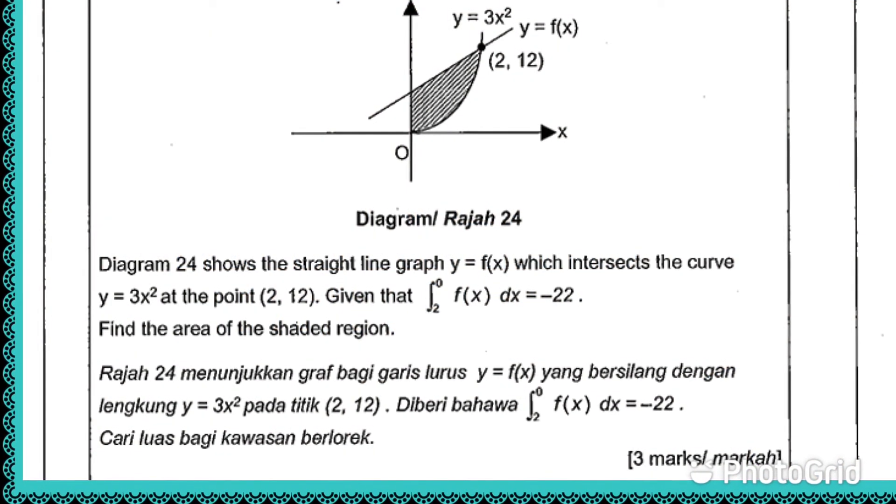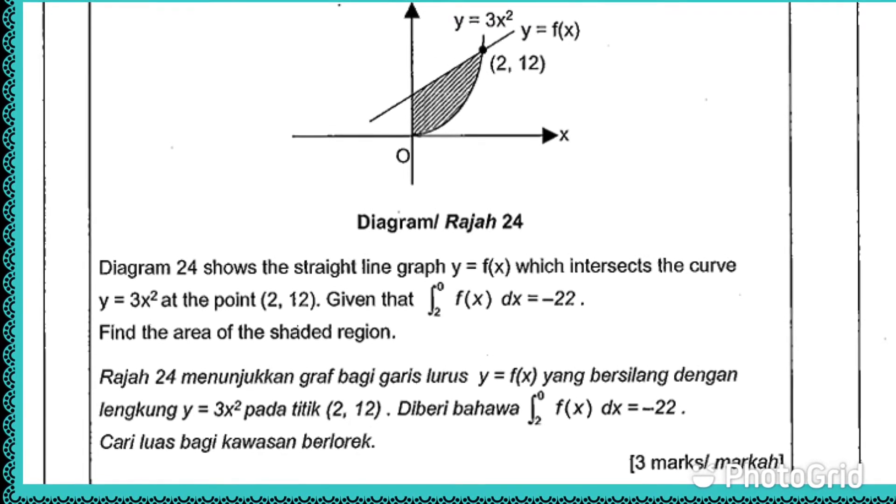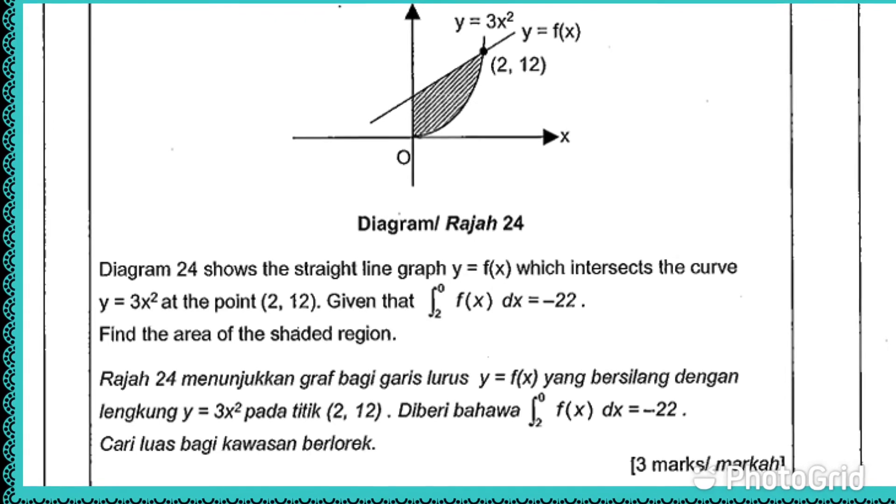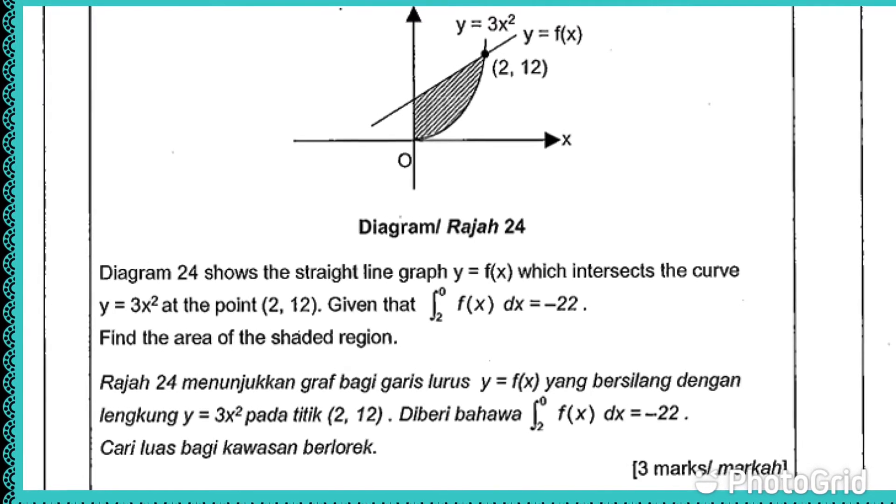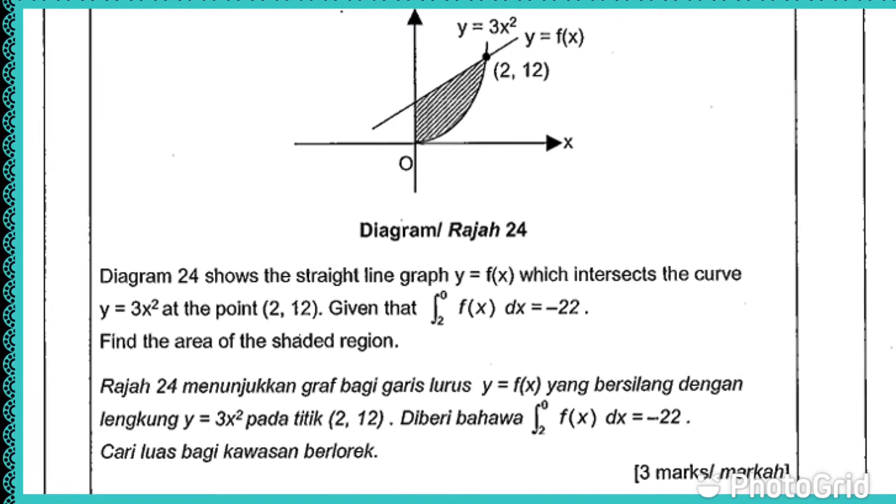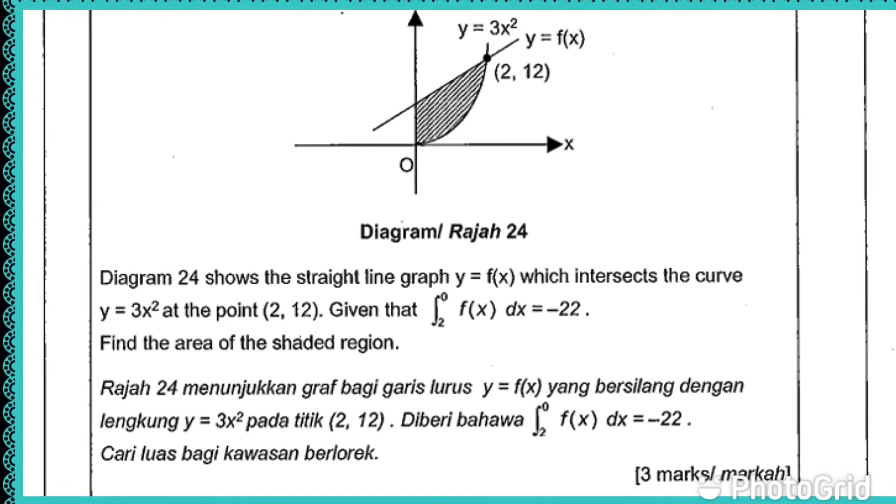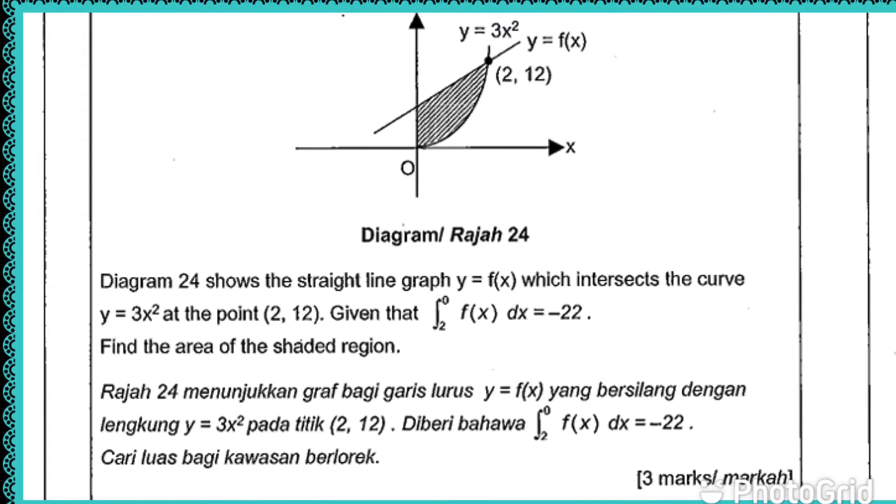Diagram 24 shows a straight line graph y equals f(x) which intersects the curve y equals 3x squared at the point (2, 12). Given that the integrate from 2 to 0 for the function equals negative 22, find the area of the shaded region.